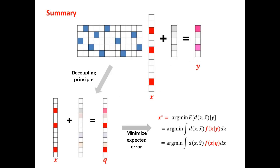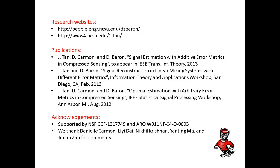To summarize this video, what we're really doing is we apply the decoupling principle to turn a matrix vector product problem into a scalar signal estimation problem, and then we minimize the expected error. This procedure allows us to better reconstruct the data, regardless of the error metric. Thank you very much for your attention. And if you want to learn more about this work, please visit our website. Thank you.